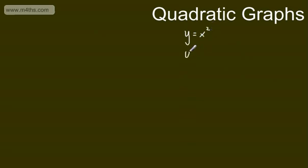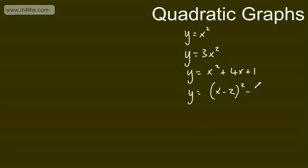The next ones we're going to look at are quadratic graphs, and these are generally in the form y is equal to x squared, or some variation. So you might have y is equal to 3x squared, y is equal to x squared plus 4x plus 1, y is equal to x minus 2 all squared minus 7, or y is equal to 3 minus x squared. What we can see with all of these graphs is the highest power of x is x squared. We always need the highest power to be an x squared term.